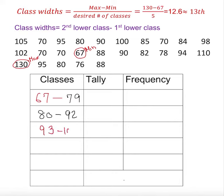If I keep doing that, I can get the next number. If I add, it's going to be 93 to 105, and 106 to 118, and 119 to 131. I stop because 130, the maximum number, is already in this class. As long as the maximum number falls anywhere, even the beginning or at the end, we stop.